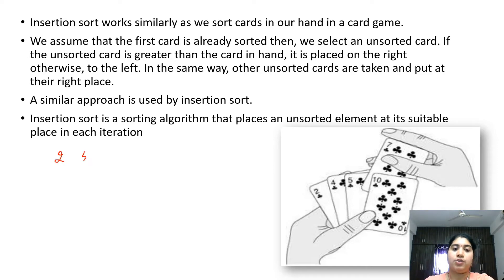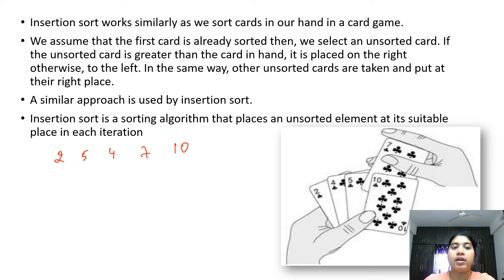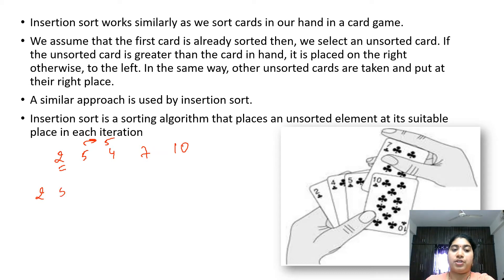So I have a card sequence 2, 5, 4, 7 and 10. How can we sort this card set? First I will consider the first card is already in sorted order. So from the second card onwards I will start sorting. I will consider the second card 5 and compare with the previous card 2. They are in proper order so I don't perform any swapping operation here. So the sorted cards have 2 and 5.